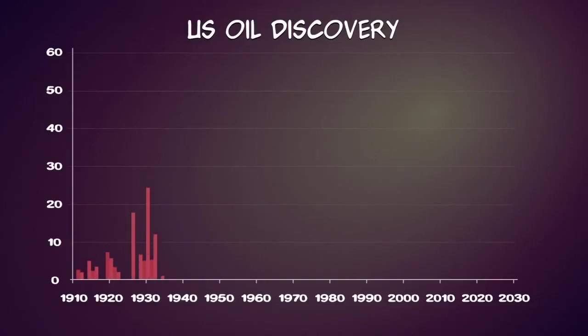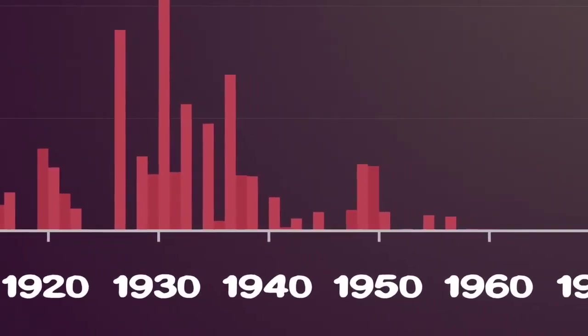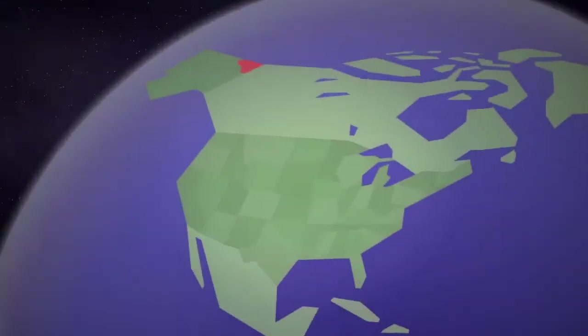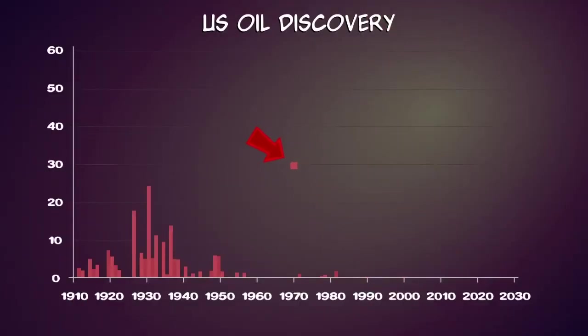The 1930s saw the highest rate of oil discoveries in US history. In spite of advanced technology, the decline in the discovery of new American oil fields has been relentless. More recent finds, such as ANWR, would at best provide enough oil for 17 months.